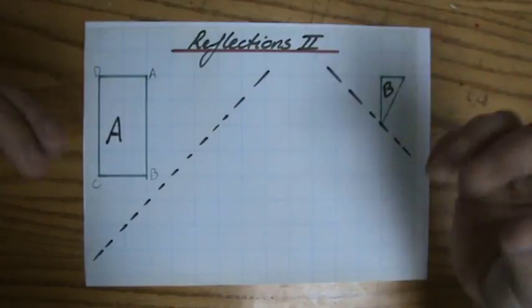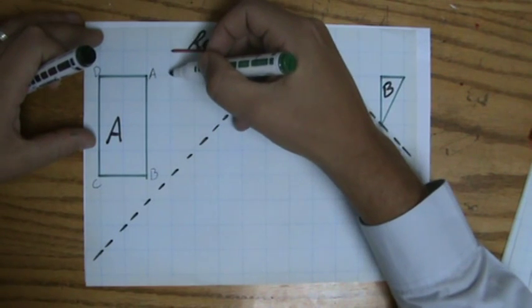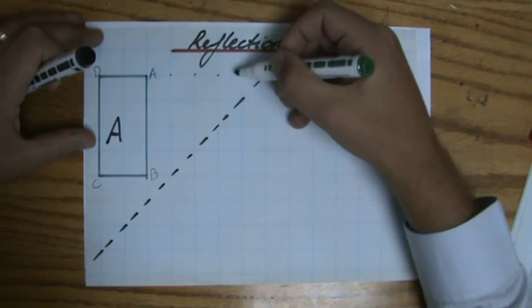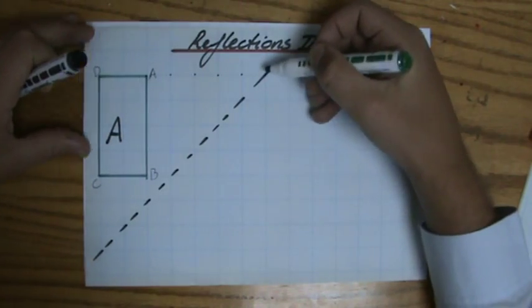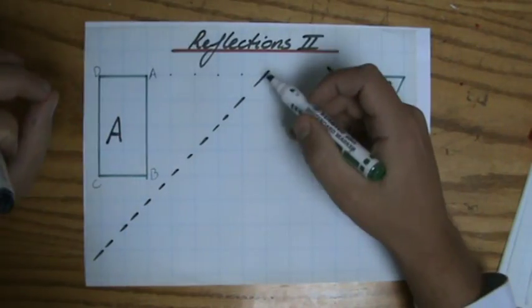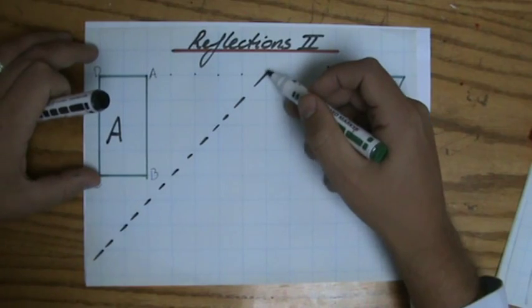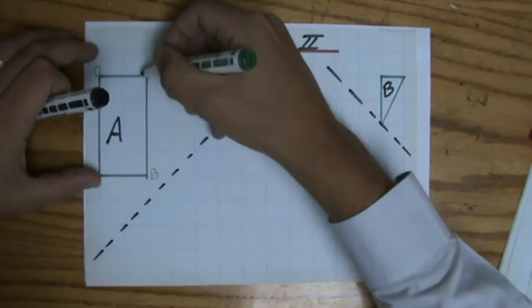I always go horizontally. Let's go: how many steps? One, two, three, four, five. So it's five steps to my mirror line.